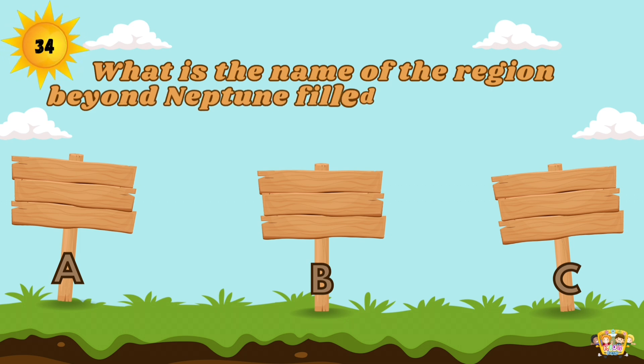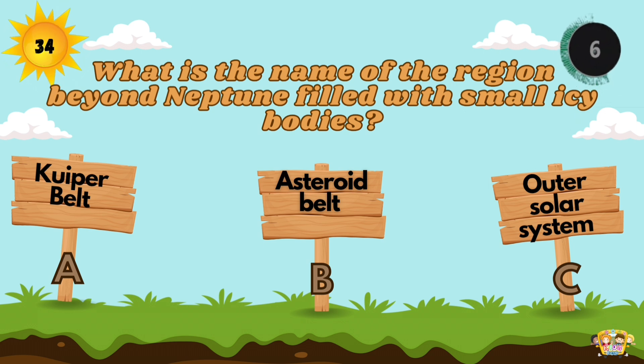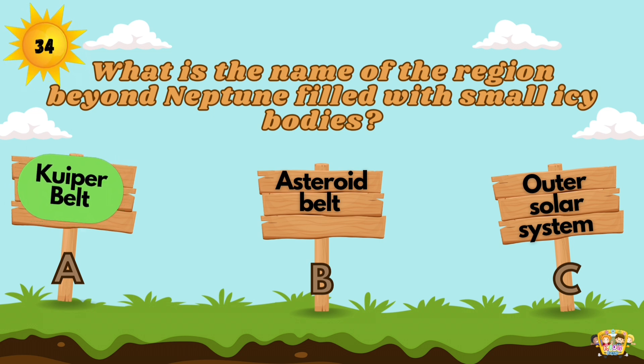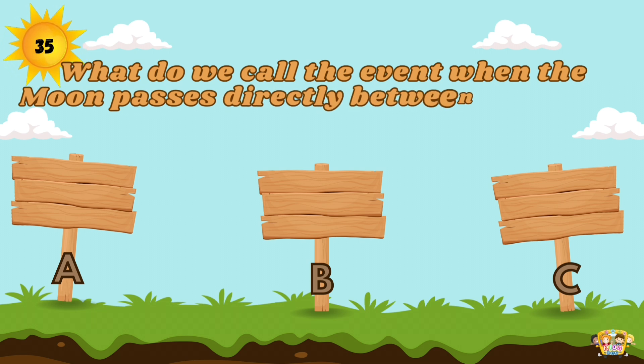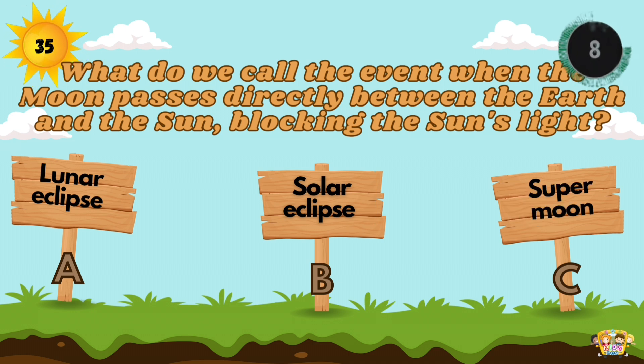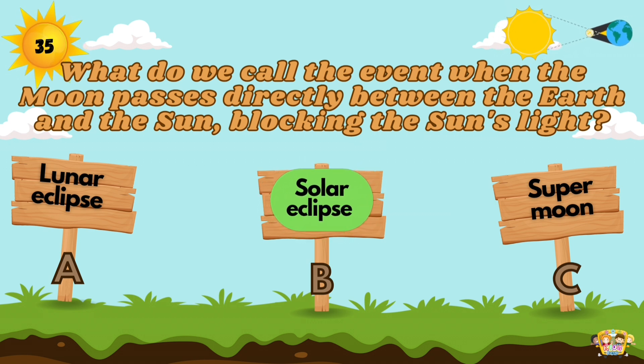What is the name of the region beyond Neptune filled with small icy bodies? The Kuiper belt is a donut-shaped region of icy objects beyond the orbit of Neptune. What do we call the event when the moon passes directly between the Earth and the Sun, blocking the Sun's light? A solar eclipse happens when the moon passes between the Sun and Earth.